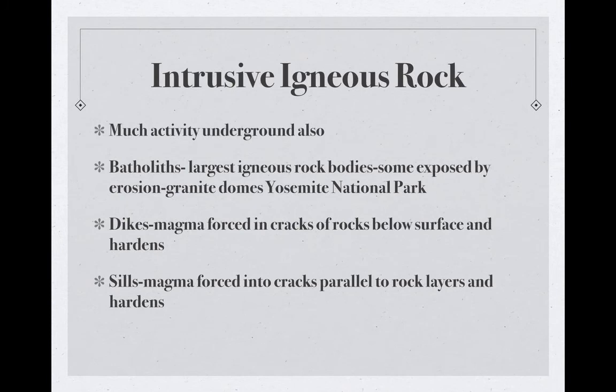Intrusive igneous rocks — much of this activity is underground. Batholiths are the largest igneous rock bodies; some are exposed by erosion, as in Yosemite National Park. We can also have dikes, where magma is forced into cracks of rock below the surface and hardens. Then we have sills, where magma creeps up into cracks parallel to the rock layers — they're horizontal to the earth, just like window sills.